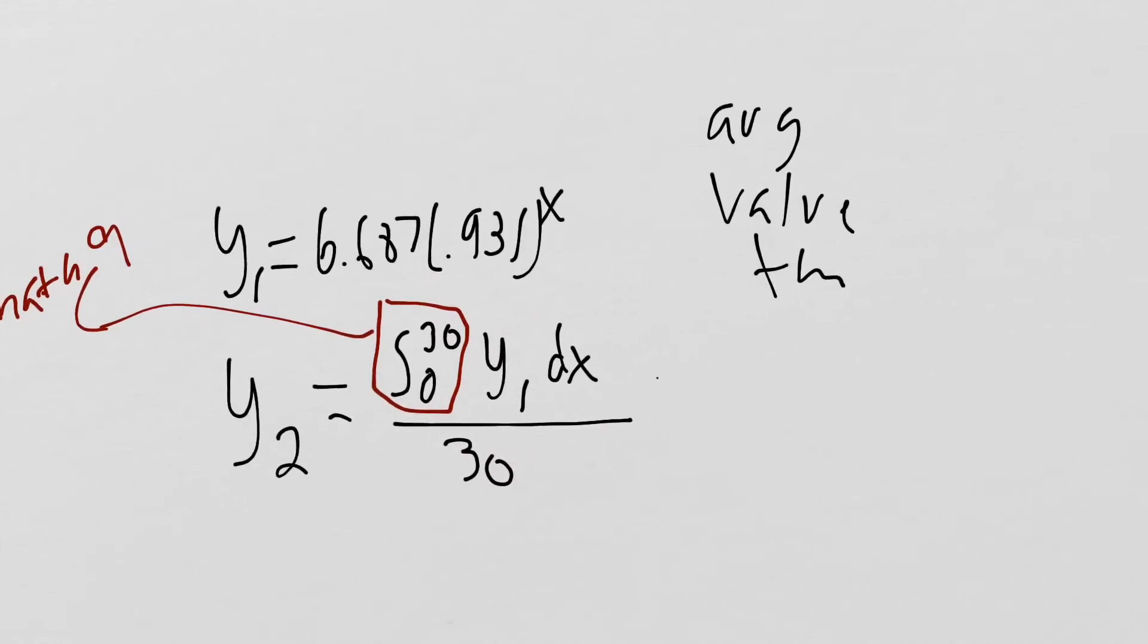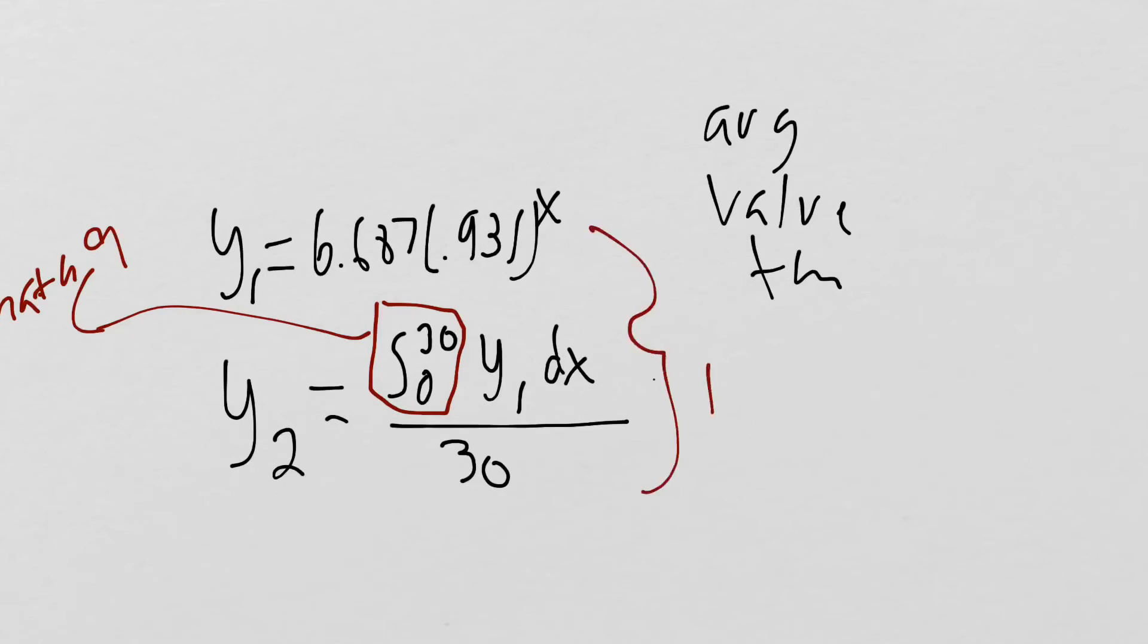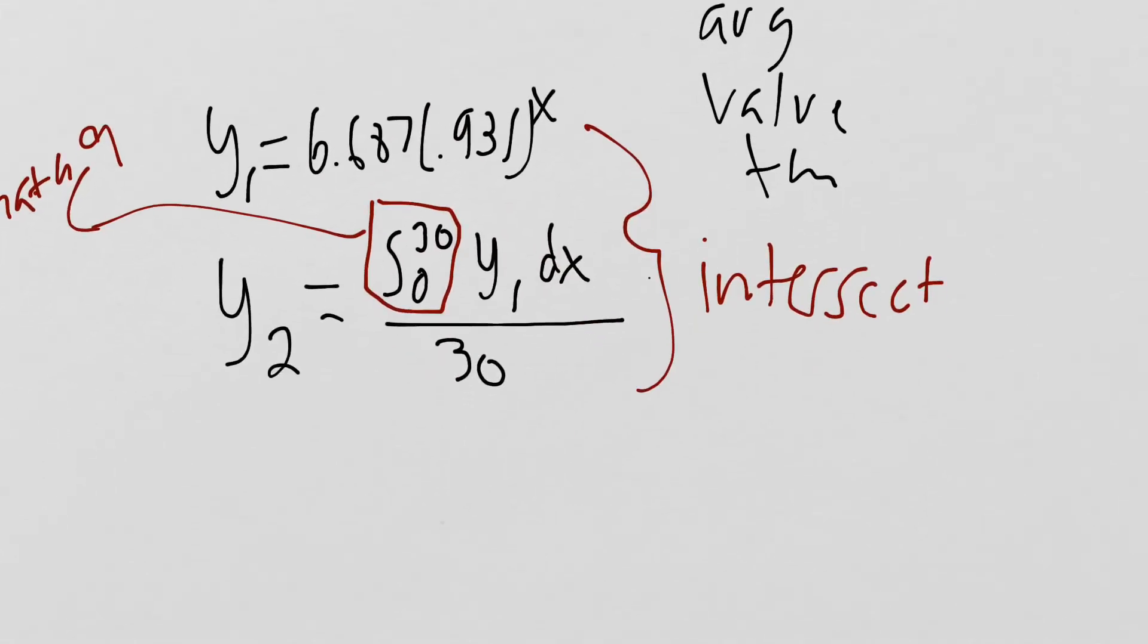We're going to have to hit graph and then do the intersect feature. Make sure you're really careful with how you plug this in. Make sure you have it plugged in exactly correctly. Make sure you have your Y1 graph and intersect. Then we'll find out that it happens at t equals 12.415 days.